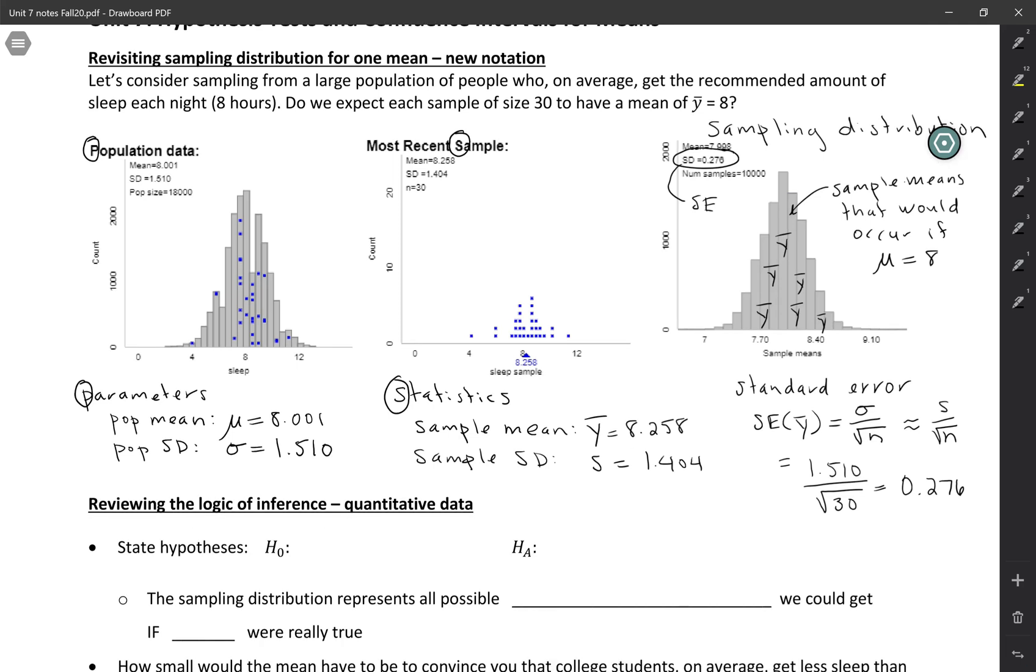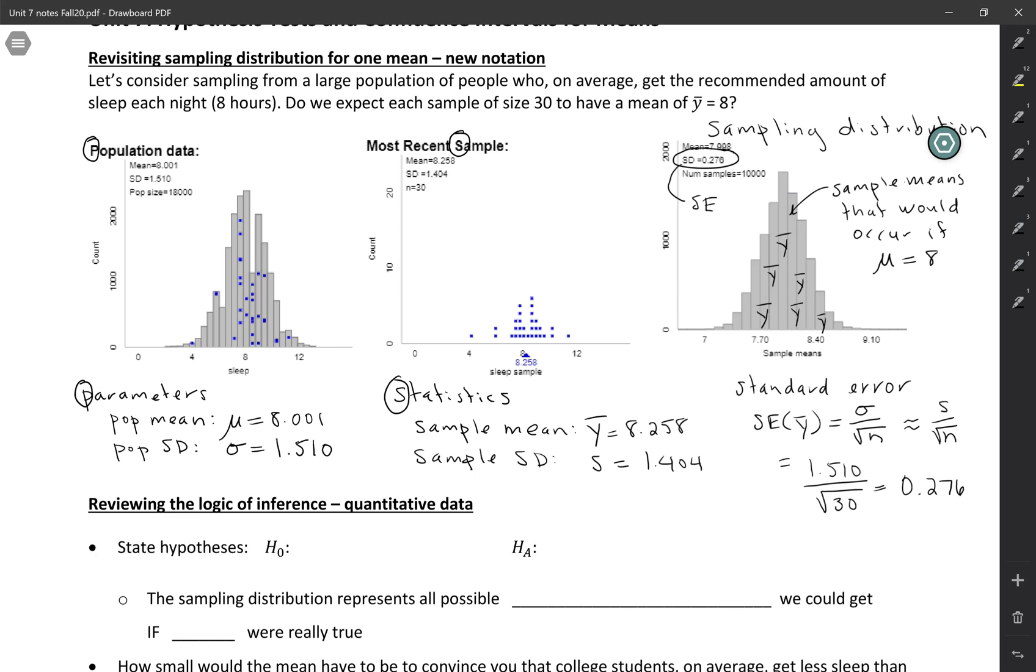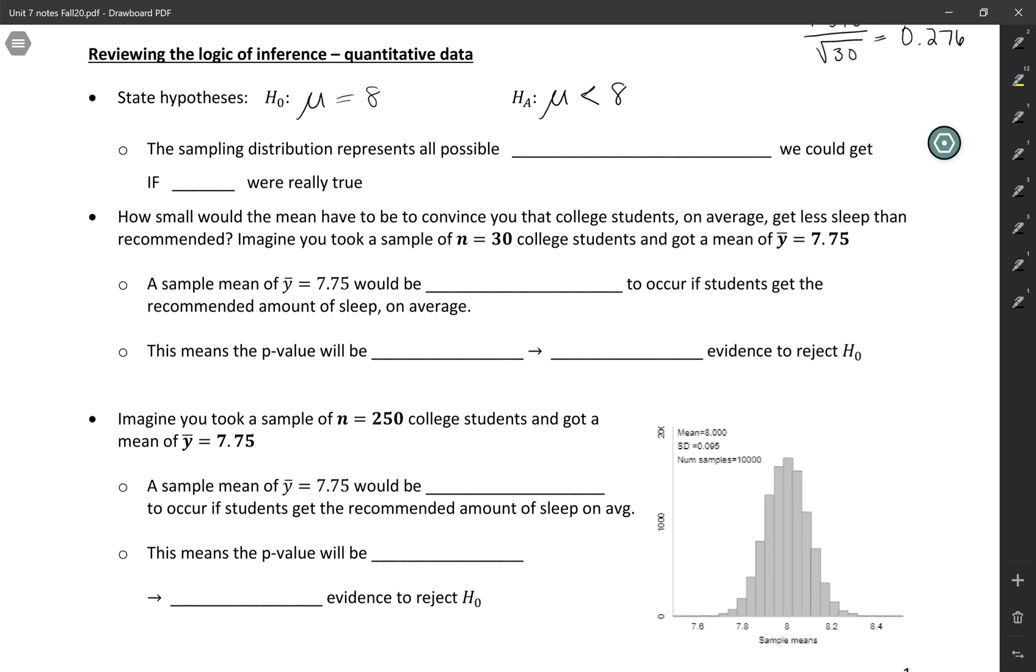In the next activity, you're going to be reviewing the logic of inference. So this is a process that you've been through a lot for categorical data, but you're going to rethink it for quantitative data now. And I actually am missing the question. I'll have to put that back on the page. But the question is, do college students get less sleep than recommended? And we're going to think about different samples and how much evidence they provide. So if we would go to state our hypotheses here, we want to do it in terms of mu. Because remember, hypotheses are always statements about the parameter. In this case, the population mean. And if we're thinking about whether people get less sleep than recommended, the recommended amount of sleep is eight hours. So remember, the null always has an equal sign in it. And if we're trying to prove that students get less than the recommended amount of sleep, that would be the alternative. So I'm going to stop there and let you fill out the rest of the page after working through a Google form.